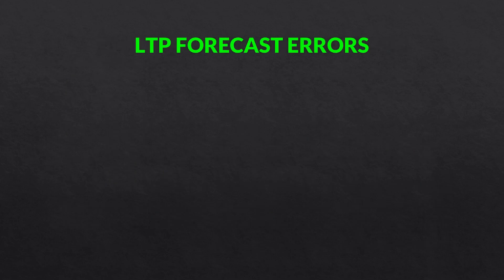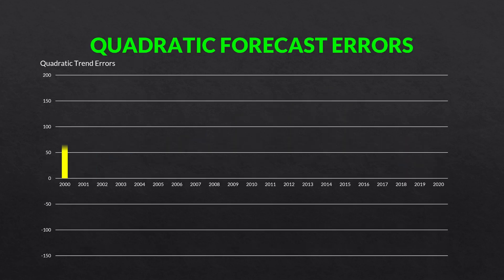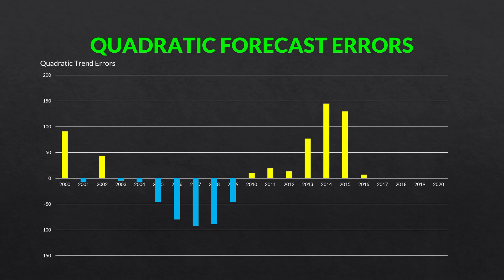Here we have our linear trend projection forecast errors — the straight line model. We can see that for the straight line model, we have very large errors at the beginning, large errors towards the middle, and large errors towards the end. That's because we are fitting a straight line model to data that has a curve to it, and therefore we tend to have large errors. Now let's see what the quadratic trend projection errors look like. They are a lot smaller. This should be intuitive — we could see from the graph that our quadratic trend projection fit the data much better, and we had an R-squared value of 0.97.